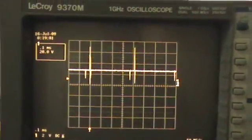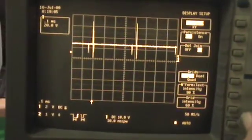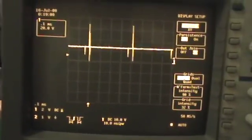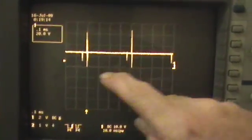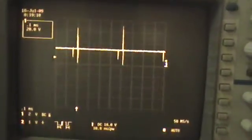Let me turn the grid intensity down a little bit. Okay, so you're seeing some nice spikes on that signal, but you don't see that drop in the voltage there.